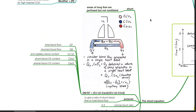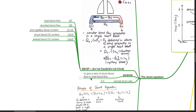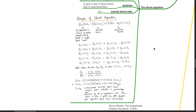The shunt equation: shunt occurs in areas of lung that are perfused but not ventilated. The shunt equation is: Qs / Qt = (CcO₂ − CaO₂) / (CcO₂ − CvO₂), where Qt equals total blood flow, Qs equals shunted blood flow, CcO₂ equals pulmonary capillary blood oxygen content, CvO₂ equals mixed venous blood oxygen content, and CaO₂ is arterial blood oxygen content. The purpose of the shunt equation is to give a ratio of shunt blood flow to total blood flow, with a normal shunt ratio of 0.3. The principles of derivation are beyond the scope of this discussion but are provided here for completeness.